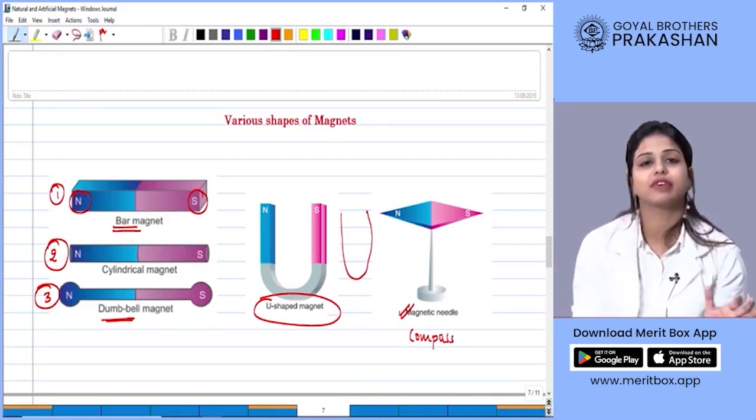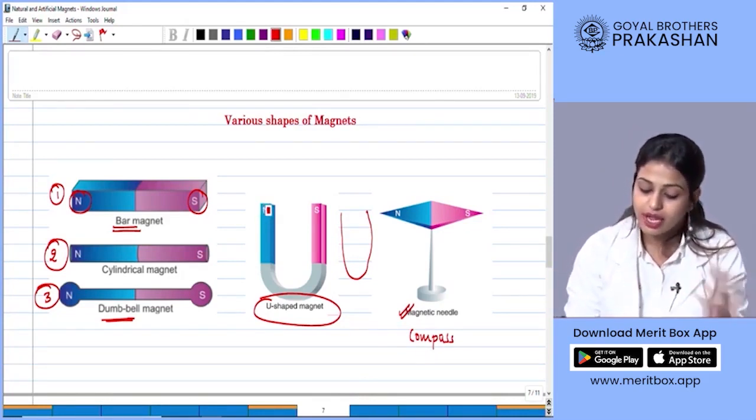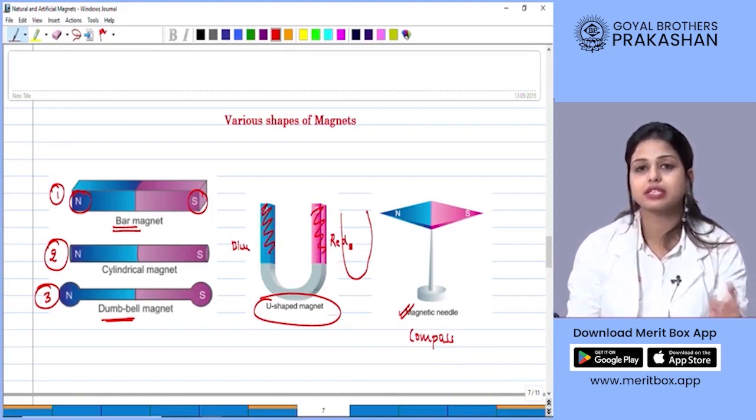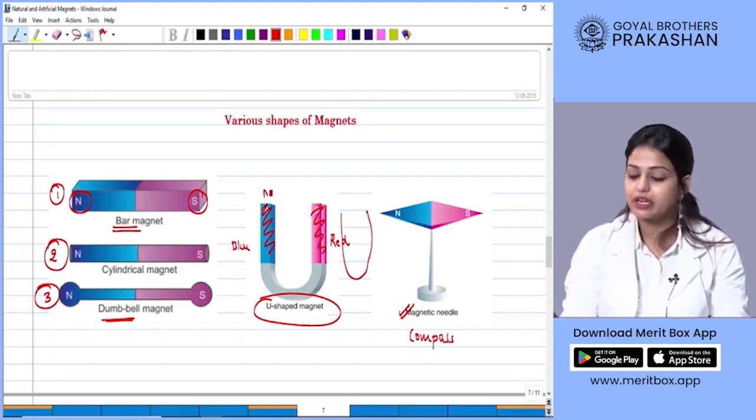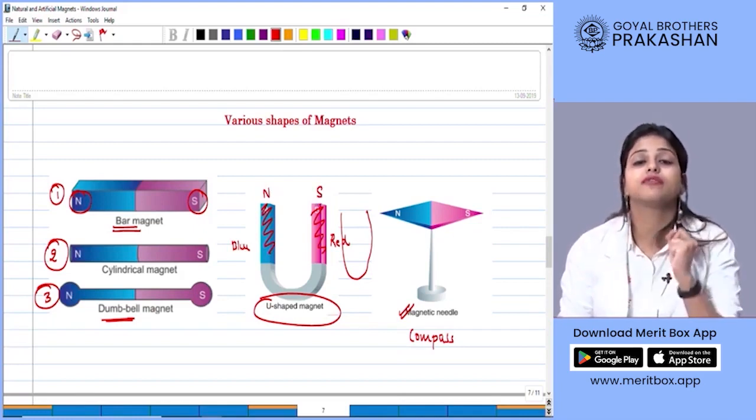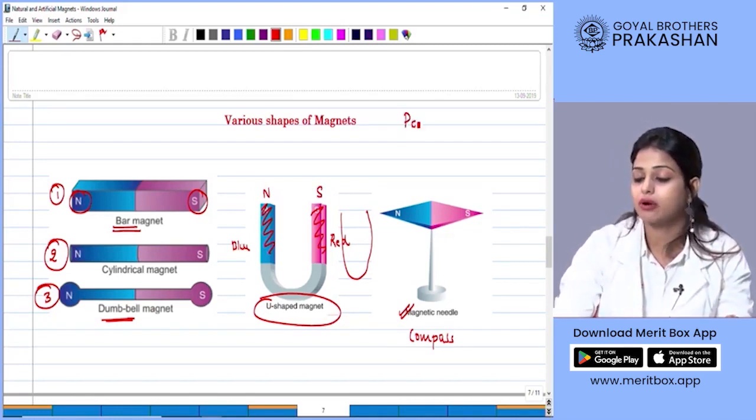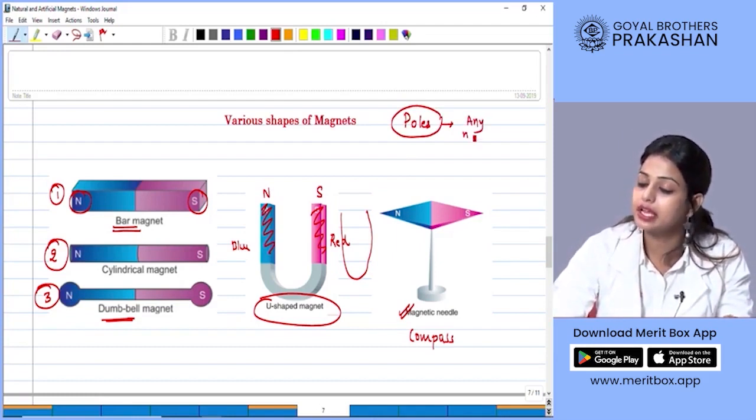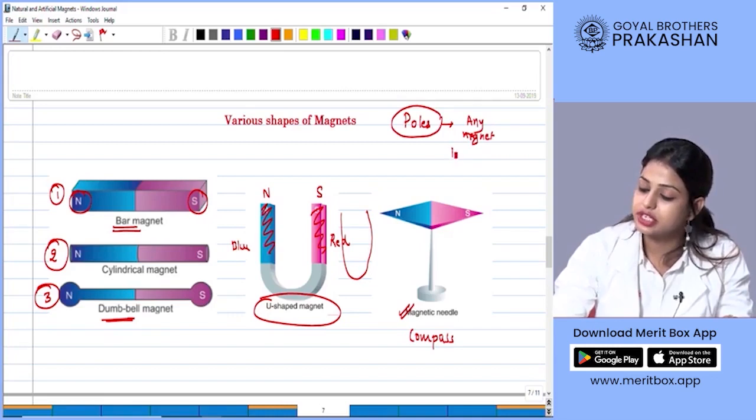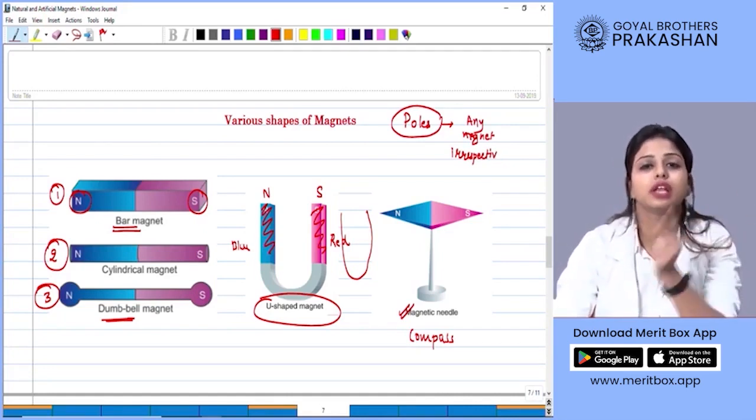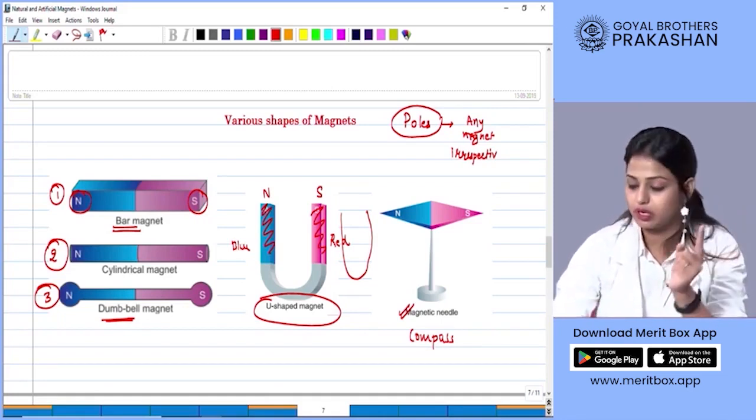Now students, if you can see in these various images, the left side is colored blue and the right side is colored red. Plus there is a letter N on the left side and a letter S on the right side. This shows that all the magnets have a very particular property that are called poles. These poles are there in any magnet irrespective of its shape. That means it doesn't matter if you go from a bar magnet to a needle or a U shaped magnet to a cylindrical magnet, all the magnets will have the north and the south pole.